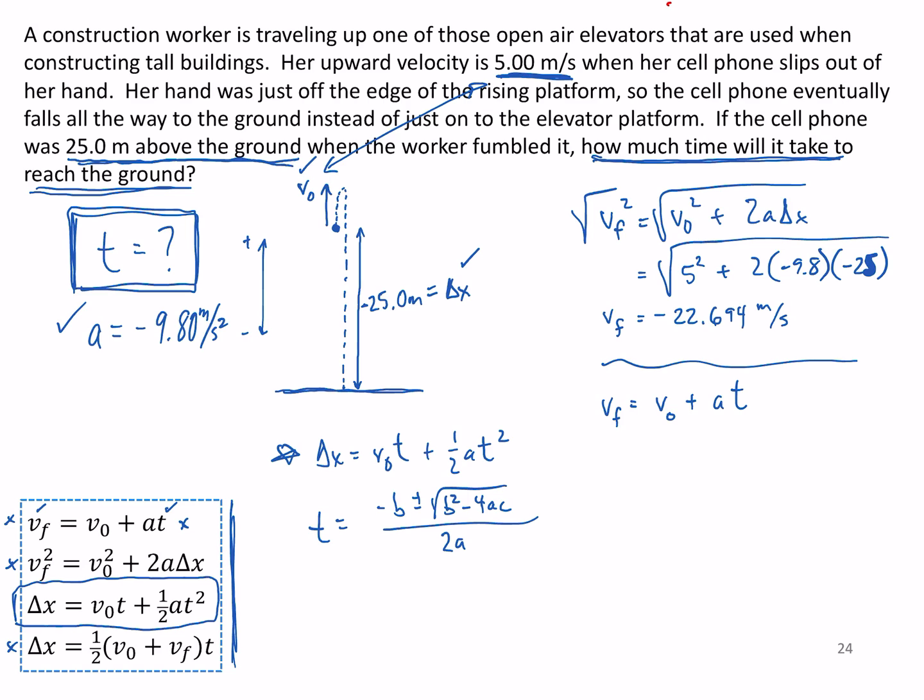And you can just take that first equation right there and you can solve it for time. So we subtract v zero from both sides, and once we do that we can divide both sides by a. It cancels over here and we just need to put in our known quantities on the left.